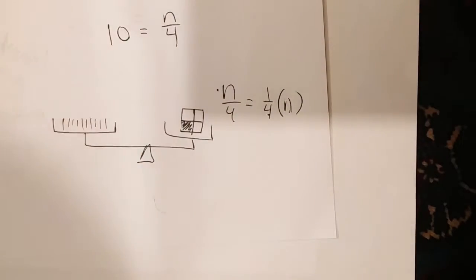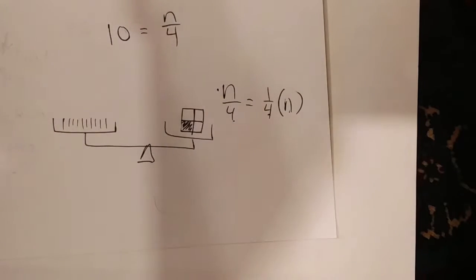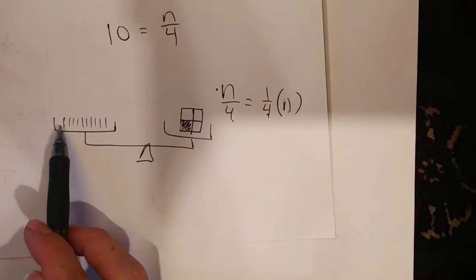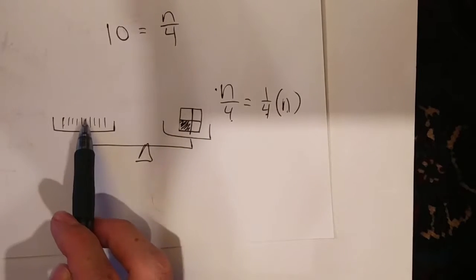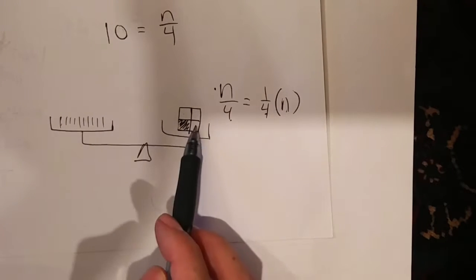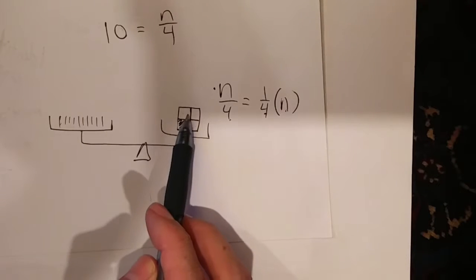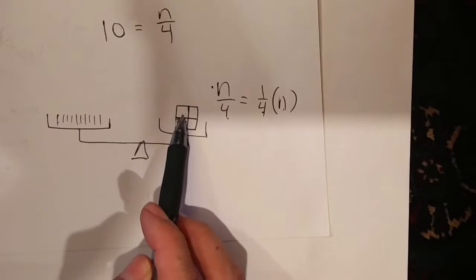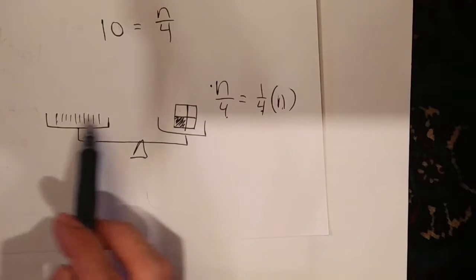Now knowing that we can use logical reasoning that if this one fourth is equal to 10, that means this fourth is equal to 10, that fourth is equal to 10, this fourth is equal to 10. So all fourths are equal to 10. So if one fourth is equal to 10, then four fourths must equal 10 four times, right?